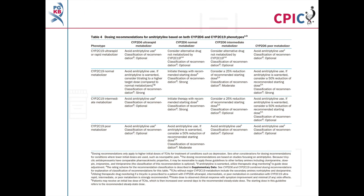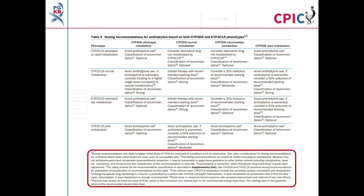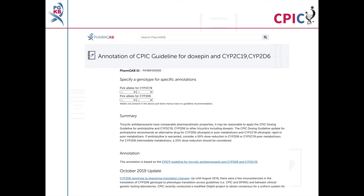The dosing recommendations for doxepine can be found in Tables 2, 3, and 4 of the guideline. Detailed footnotes pertaining to the recommendations can be found at the bottom of each table. Be aware that these dosing recommendations are for cases where higher initial doses of a TCA are warranted, such as in the treatment of depression. Recommendations for lower initial doses, for example in the treatment of neuropathic pain, are given in the guideline manuscript. This guideline has been annotated on the PharmGKB website, which includes a drop-down menu where an activity summary can be given for specific combinations of alleles.